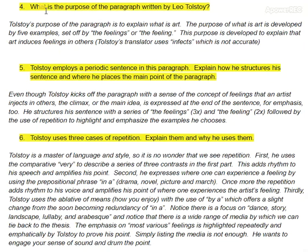What is the purpose of the paragraph written by Tolstoy? I would argue that Tolstoy's purpose of the paragraph is to explain once again what is art. The purpose of 'What is Art' is developed by five examples set off by the feeling. The purpose is developed to explain that art induces feelings — a variety of feelings — in others. Tolstoy unfortunately has a translator who uses 'infects,' which I don't think is accurate.